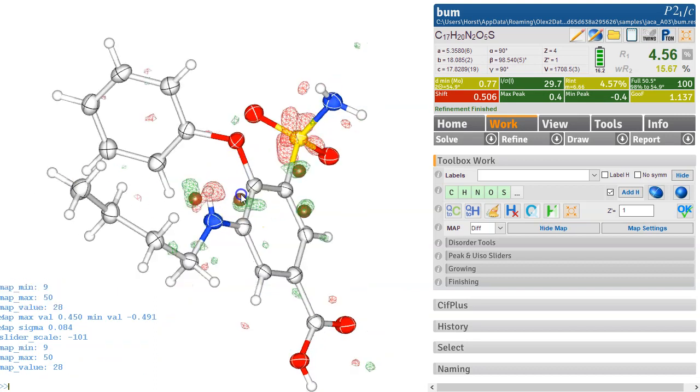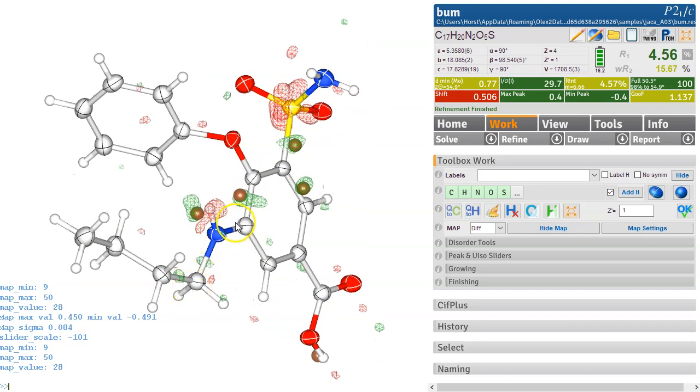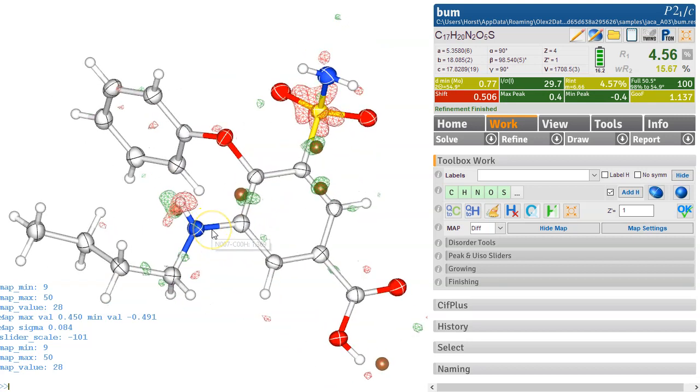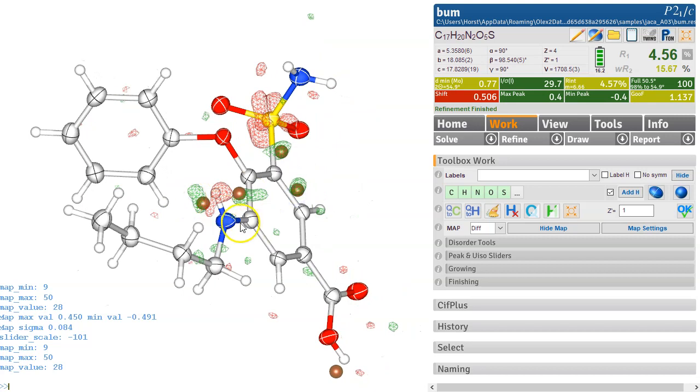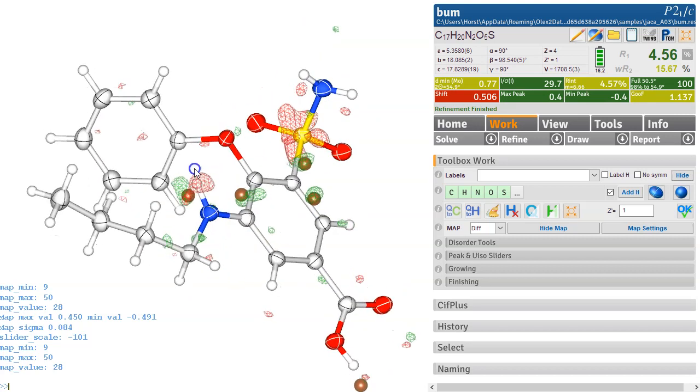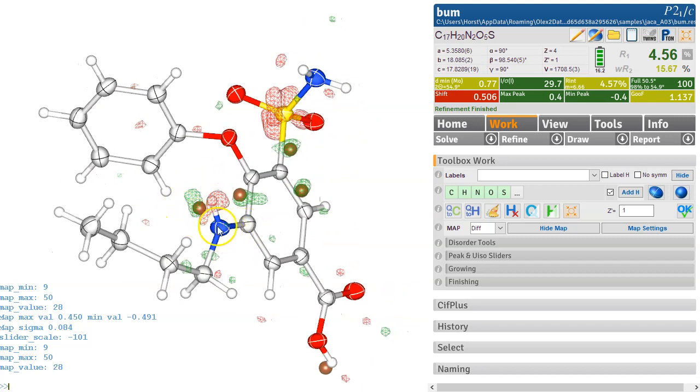Another problem, of course, is this one down here. So here, it assumed this is like an SP2 hybridized one, because that bond's quite short, but really, it's a tetrahedral amine here. So it's got the hydrogen over here, not here.